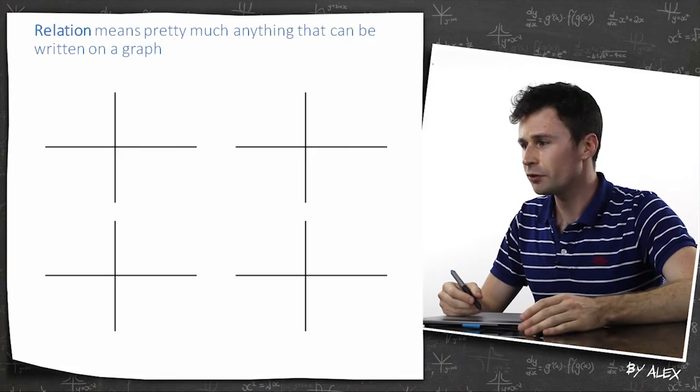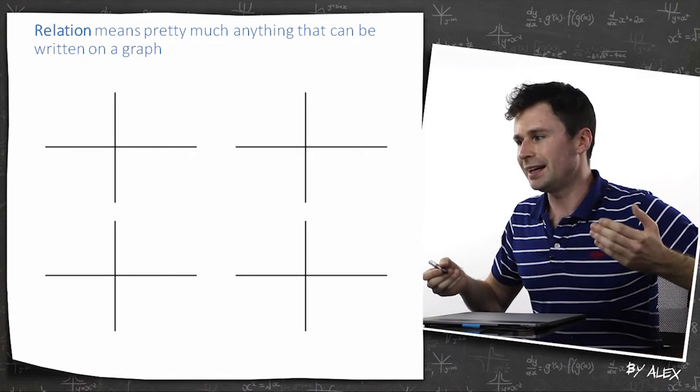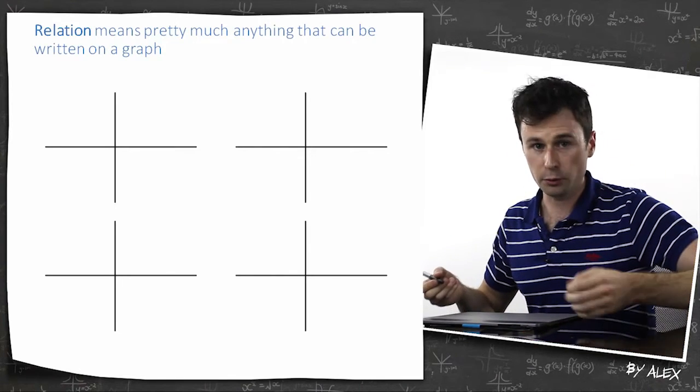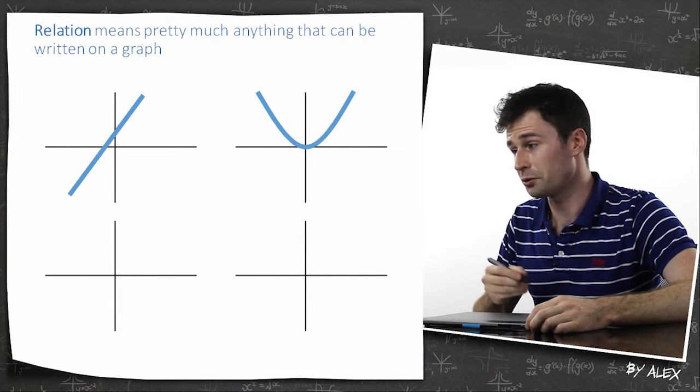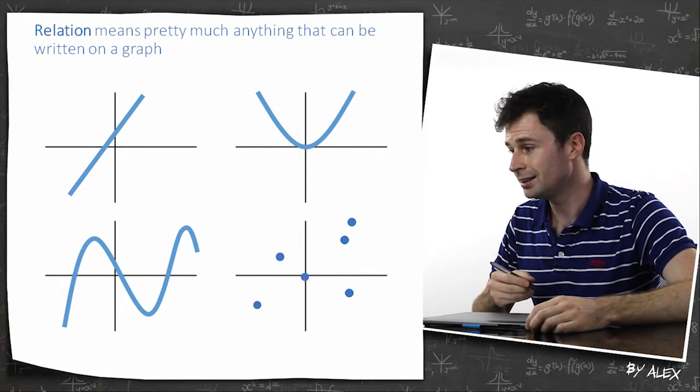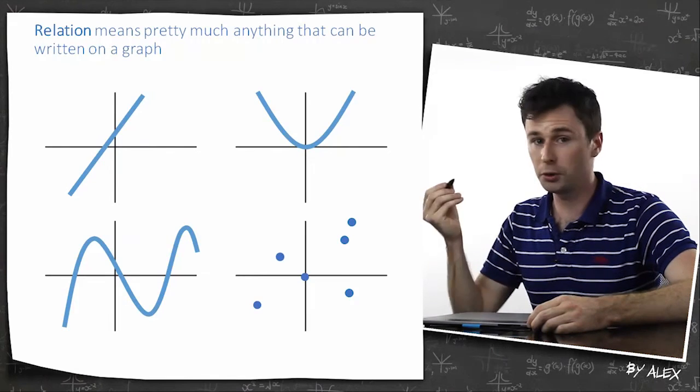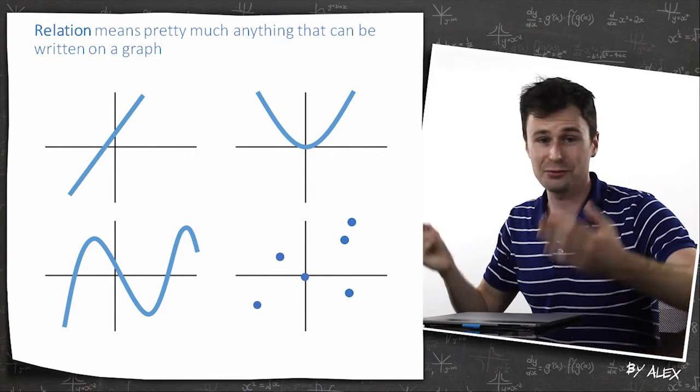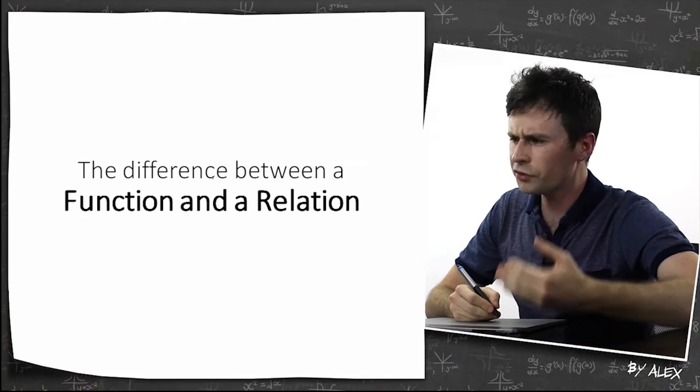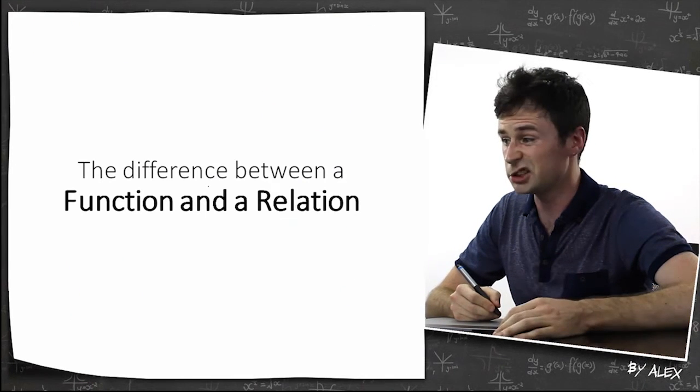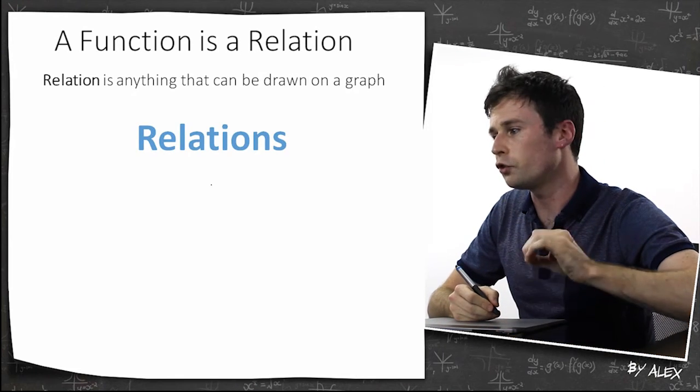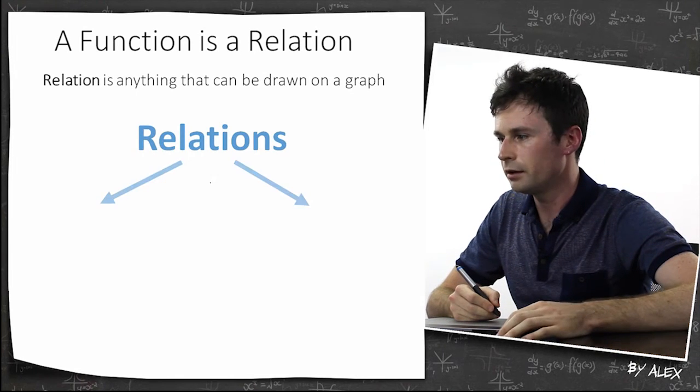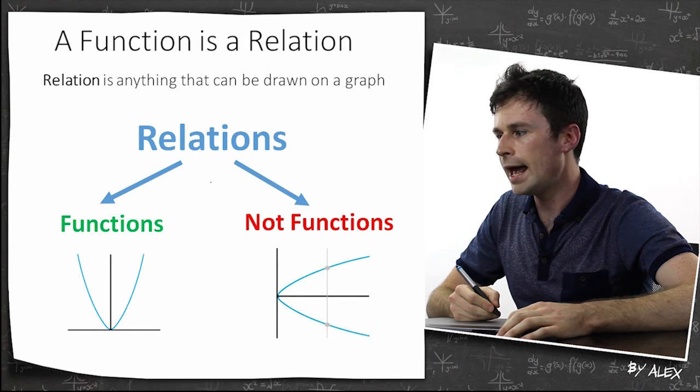So what is a relation? A relation pretty much means anything that can be written on the graph or anything that can be drawn on the graph. So that's a relation, that's a relation, that's a relation and that's a relation. If you can put a pen to paper and draw it on the graph, it's pretty much a relation. So what's the difference between a function and a relation? Well, a function is a relation, but relations are split into two different things. Basically, functions and not functions.